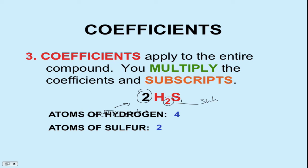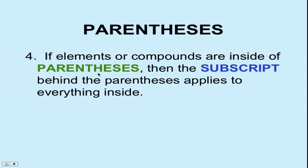Two really important things to remember for this rule: the coefficient applies to everything, and we're going to do some multiplication. Rule number four deals with parentheses, because in some chemical equations we need to keep some things separate — so we put parentheses around them.